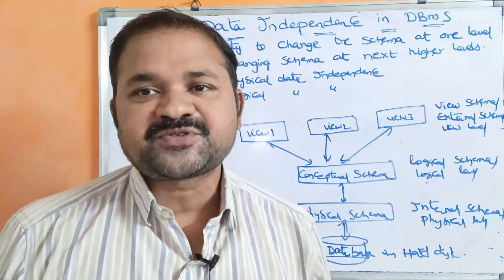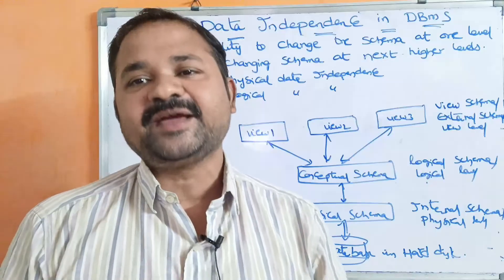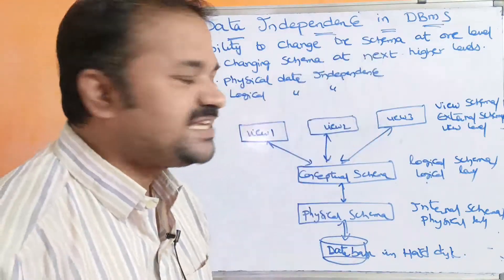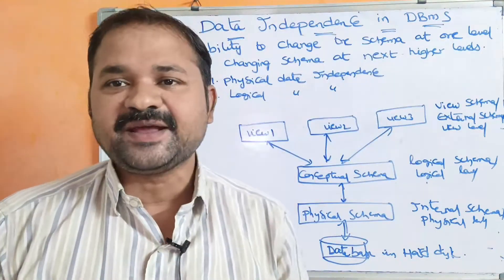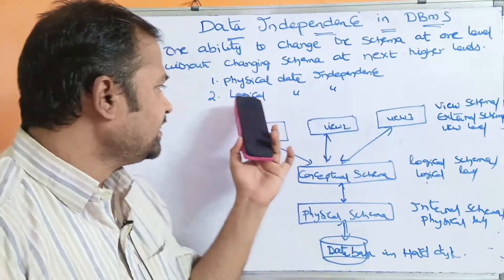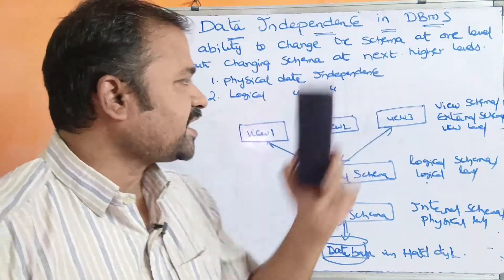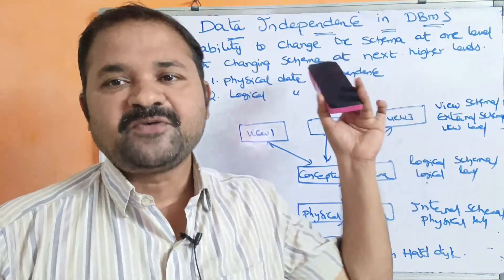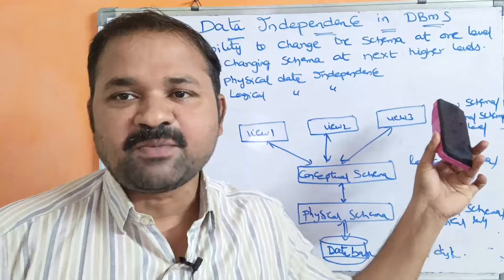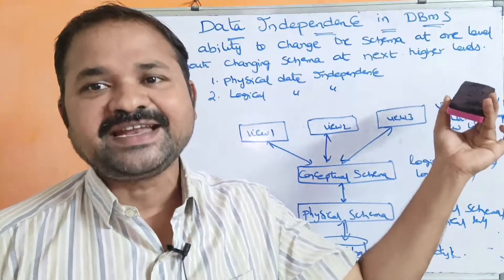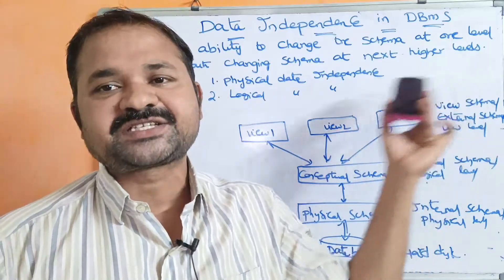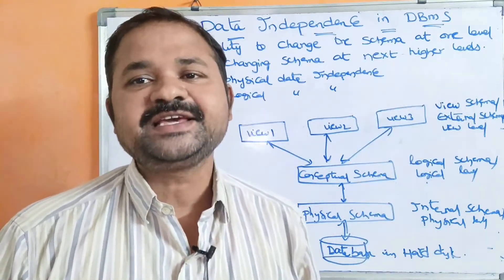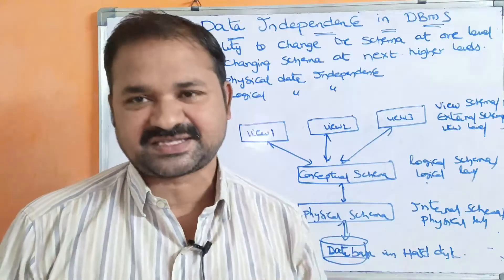We have two types of data independence. The first one is physical data independence, and the second one is logical data independence. Before discussing those, let us first look at the schemas.